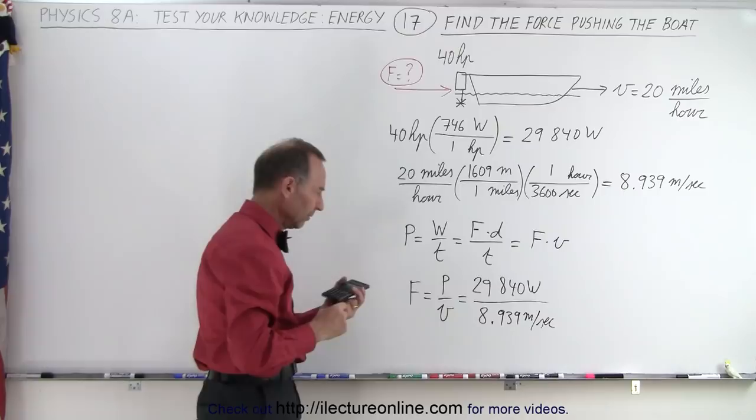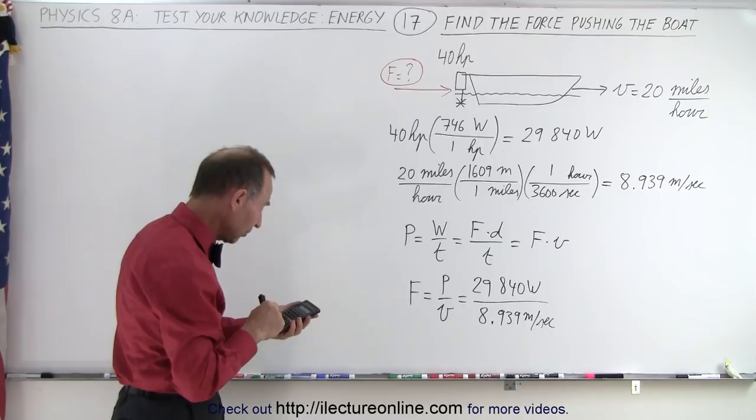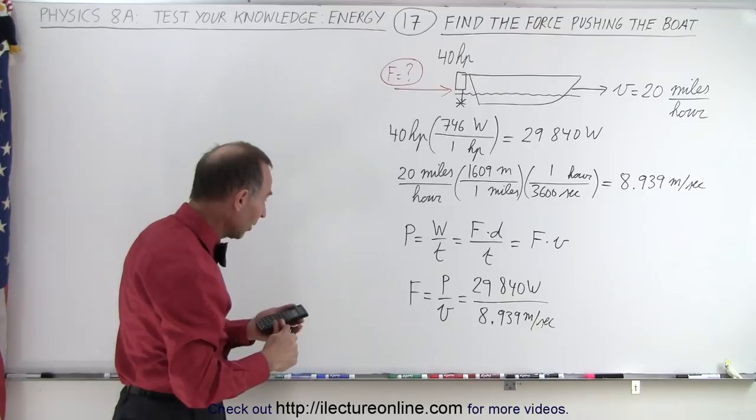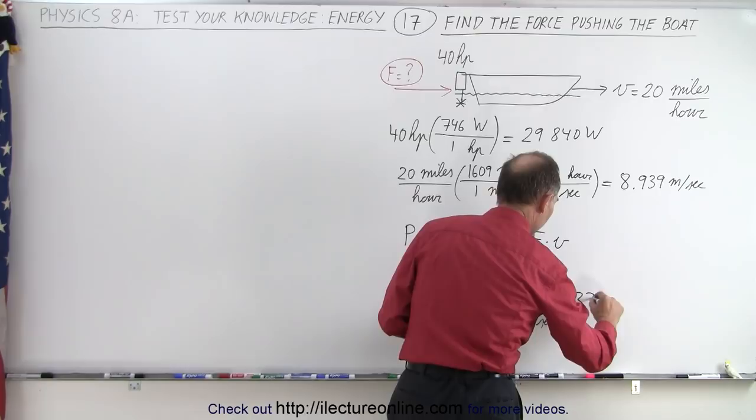And that's why we need calculators. So take the inverse that number times 29,840. That gives us a force of 3,338 newtons.